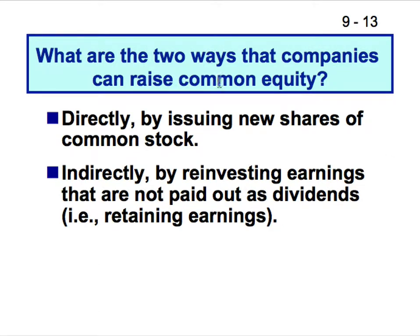What are the two ways companies can raise common equity? One is directly by issuing new shares, and indirectly by reinvesting earnings that are not paid out as dividends. The retained earnings of a company are very valuable. This is where a lot of corporate misgovernance happens.